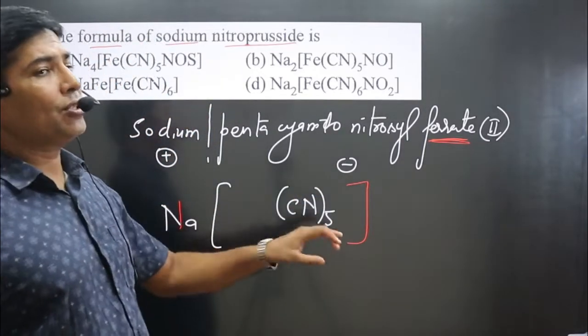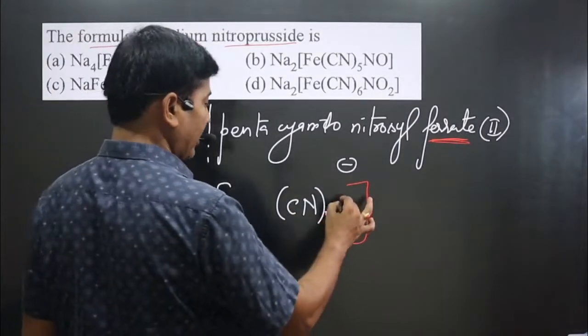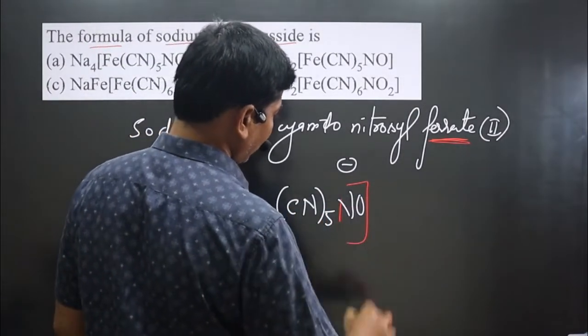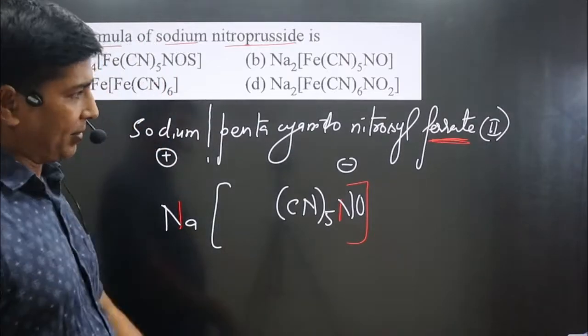Then nitrosyl, nitrosyl is a positive, very rare ligand is there, positive ligand. We have cation is there, nitrosyl cation is the positive ligand.